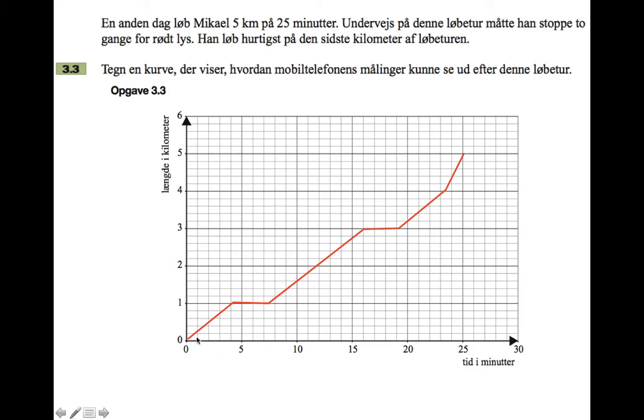So you've got him running for a bit and then it's flat where he had to stop, running for a bit again, then it's flat where he had to stop, and then he's running again. And then the last kilometer, so from four to five here, is the steepest part of the graph because that's where he's running the fastest. So it's steeper than any of these other parts where he's running.